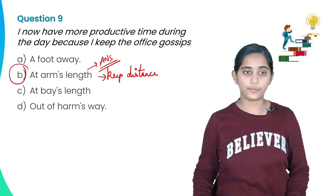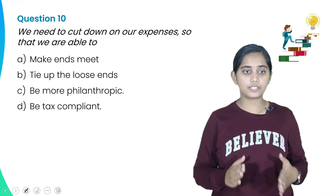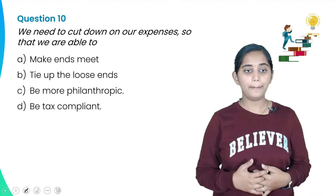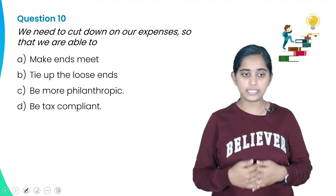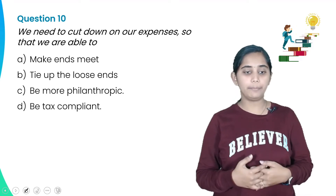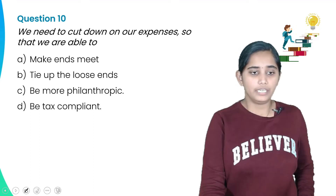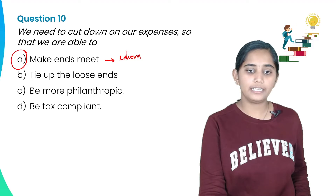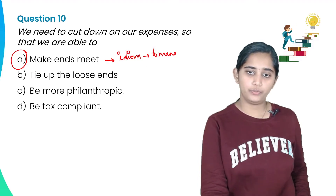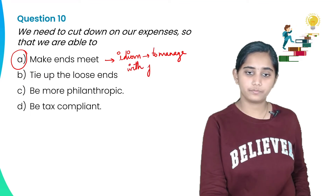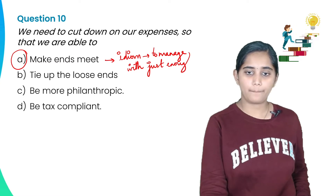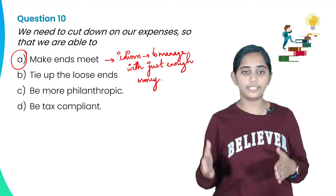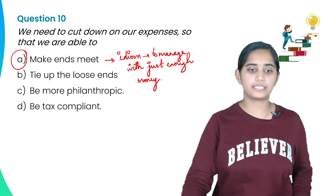Next question: 'We need to cut down on our expenses so that we are able to dash.' Options: A) make ends meet, B) tie up the loose ends, C) be more philanthropic, D) be tax compliant. The answer is obviously 'make ends meet,' which is an idiom meaning to manage with just enough money. So the answer is Option A.